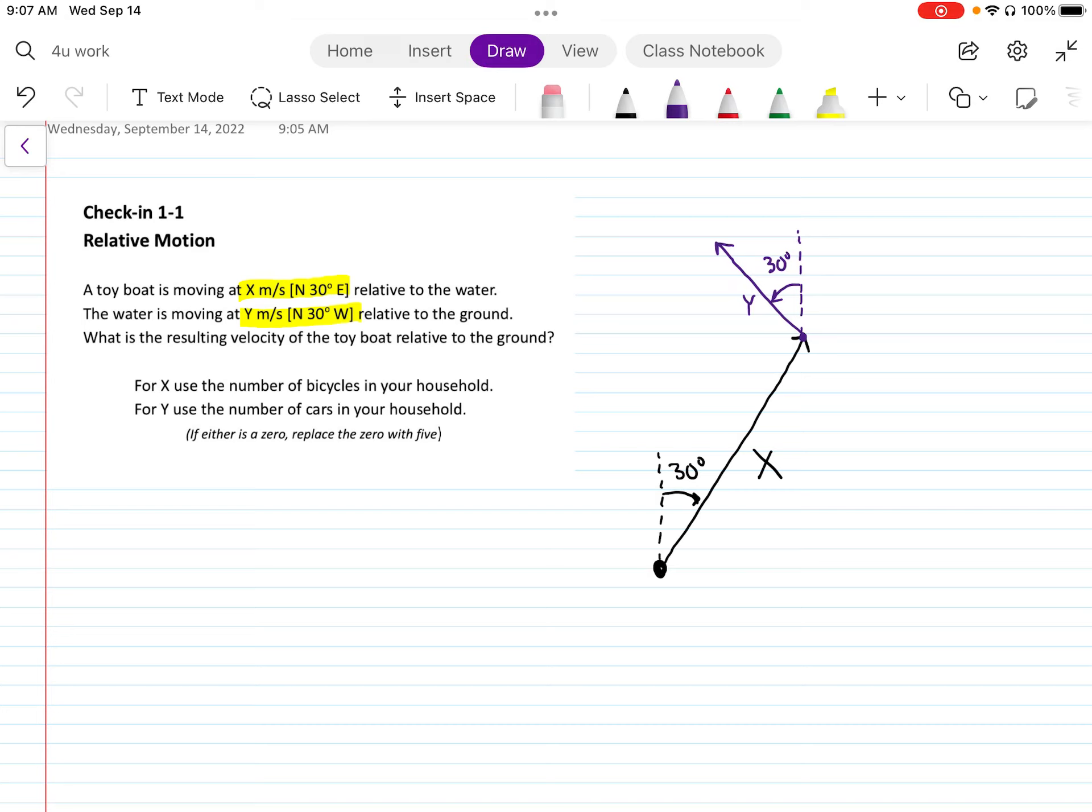When we're adding vectors you always connect the very starting point to the very ending point. So very starting point out here, ending point way up there. I want to solve for that. When I'm done I also want to have an angle. The interior angle of the triangle is going to be this. Let's call that Greek letter theta.